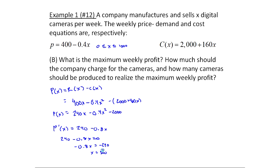Now, what would that maximum profit be? So the max profit would be what you get when you plug this in. So that would be p of 300. So I plug 300 into this, and when I do that, I end up with 240 times 300 minus 0.4 times 300 squared minus 2,000. Now I get 34,000.